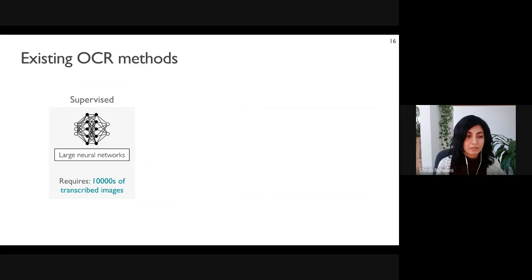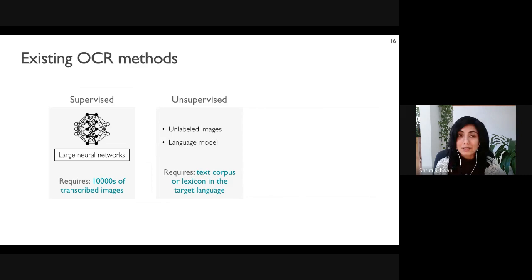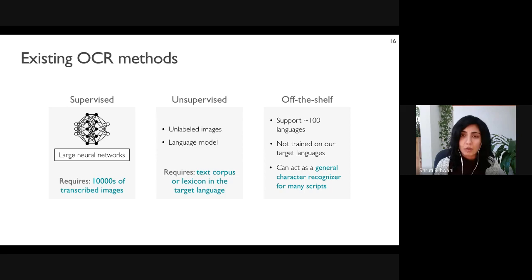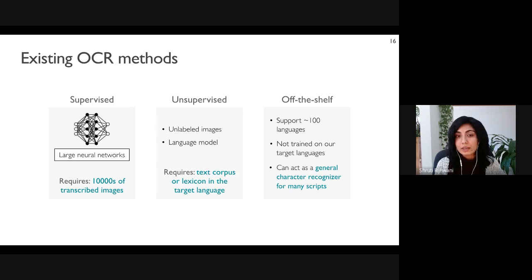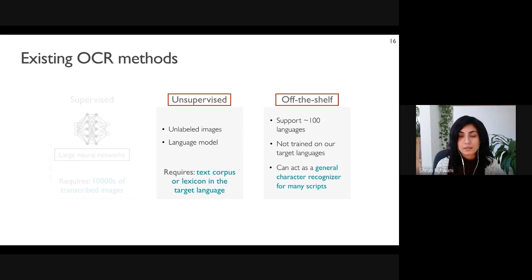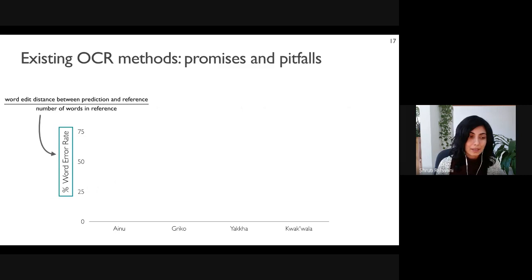OCR is a well-studied task. Supervised models are based on large neural networks using thousands of transcribed images for training. Unsupervised methods rely on a language model in the target language, which requires a text corpus. We also have large-scale off-the-shelf tools trained on up to a hundred languages. While not trained on any of our low-resource languages, they are trained on many languages and scripts and can potentially act as a general character recognizer. Since training a supervised model from scratch is infeasible with our small dataset, we focus on analyzing existing unsupervised and off-the-shelf OCR systems.